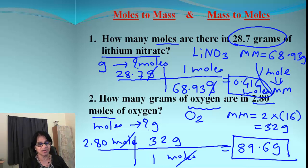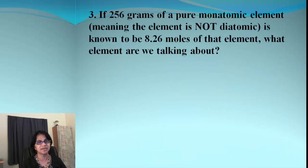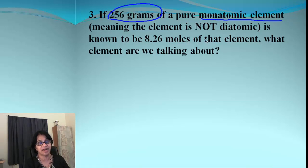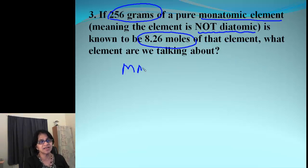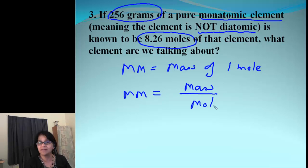All right. Let's do one more problem. And that problem is little tricky. So what is given to us is 256 grams of a pure monoatomic element is given. Look at that. What it means is it is not a diatomic. It will not be O2, N2. It will be one atom element there. And this is given to you as moles 8.26. So what element are we talking about? And I just simply, I am going to use that definition of molar mass. Molar mass is the mass of one mole.